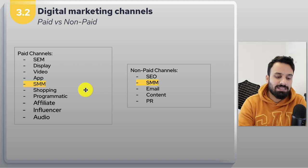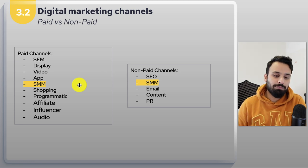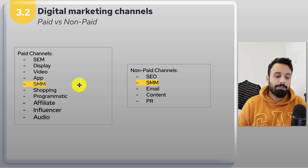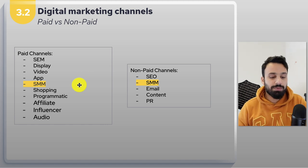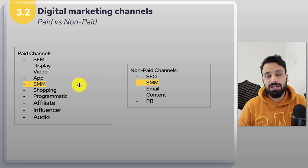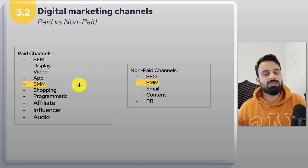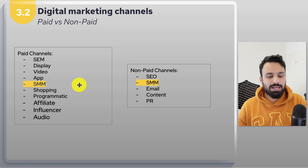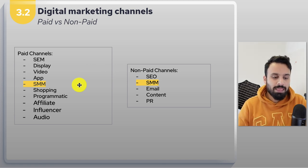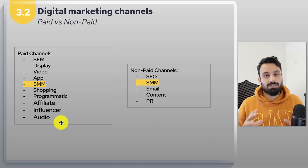Looking at channels, we first look at the division based on whether that channel needs investment or not. On the left-hand side are paid channels — SEM or search engine marketing, display advertising, video advertising, app advertising, social media marketing. Social media marketing appears in both paid and non-paid because you can run ads on Facebook as well as do organic content publishing. Then we have shopping ads, programmatic, affiliate, influencer, and audio. On the right-hand side in non-paid channels we have SEO, SMM, email, content, and PR.